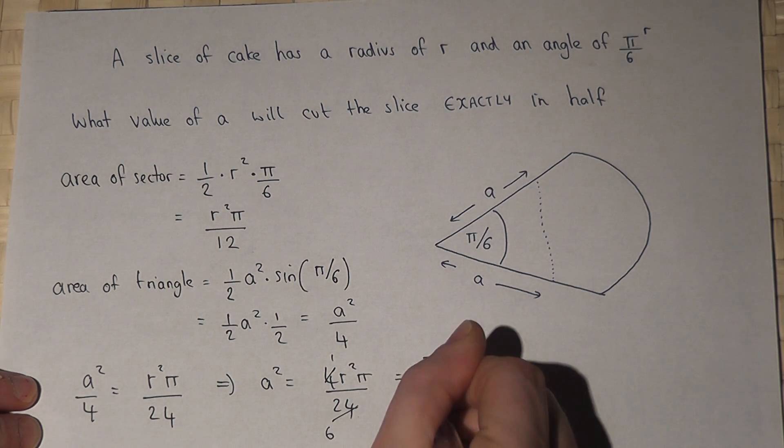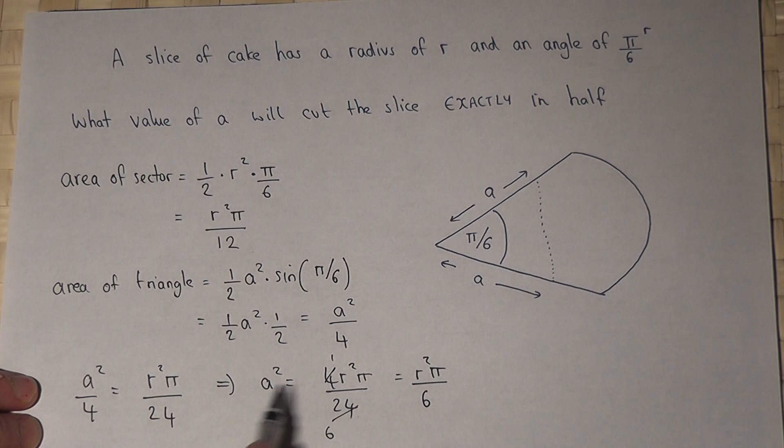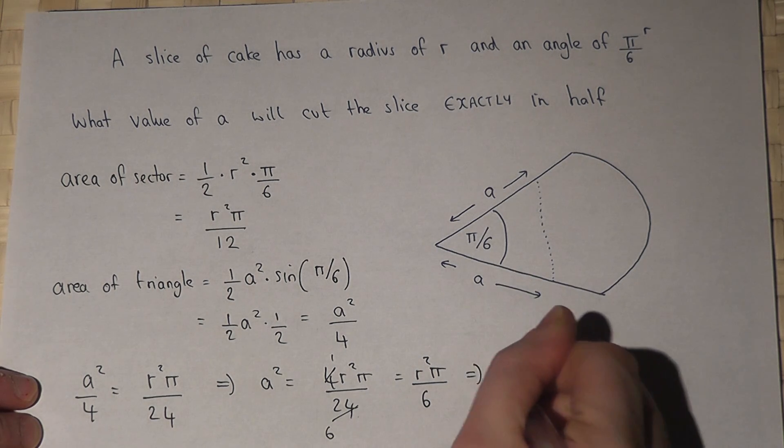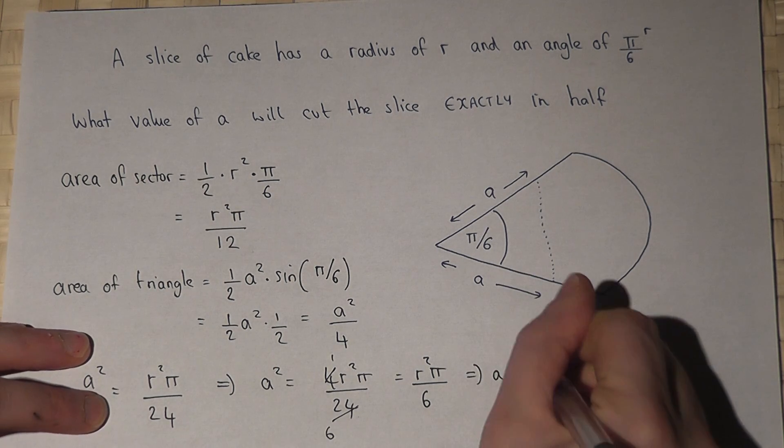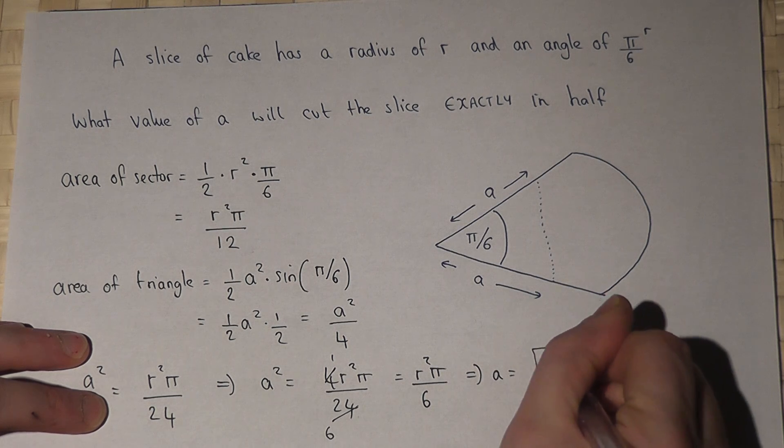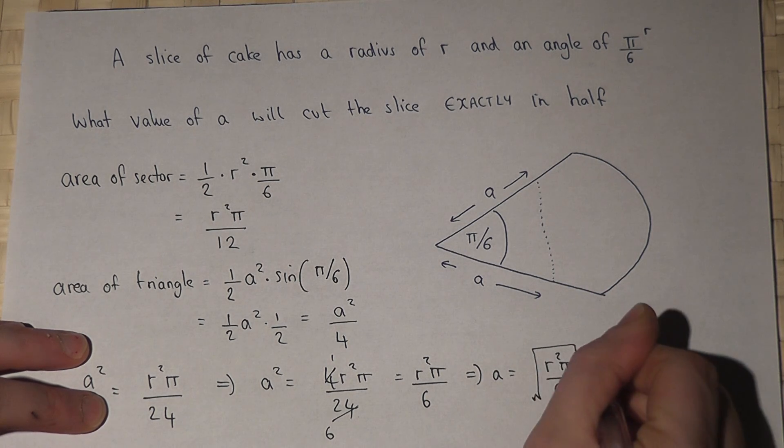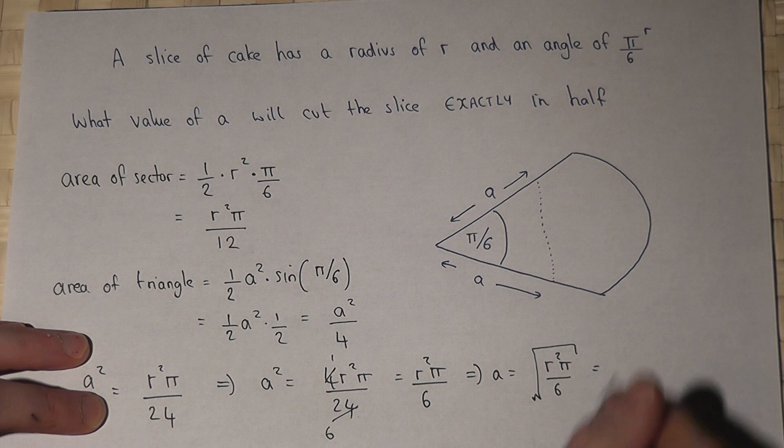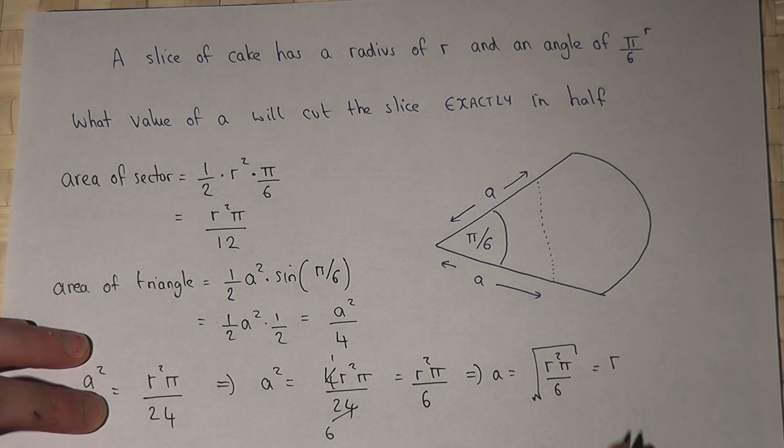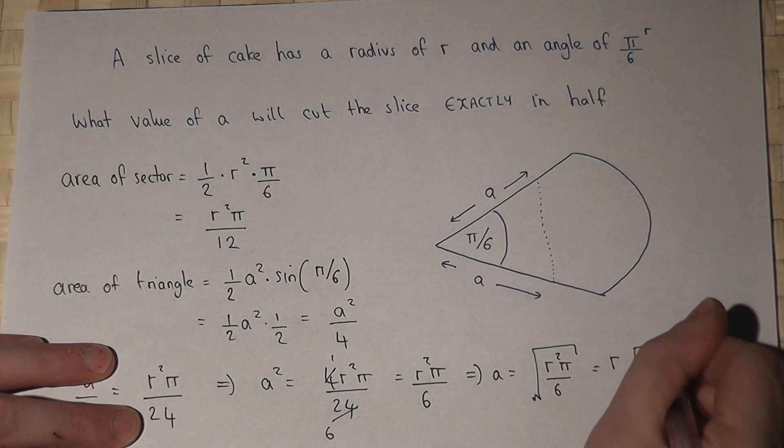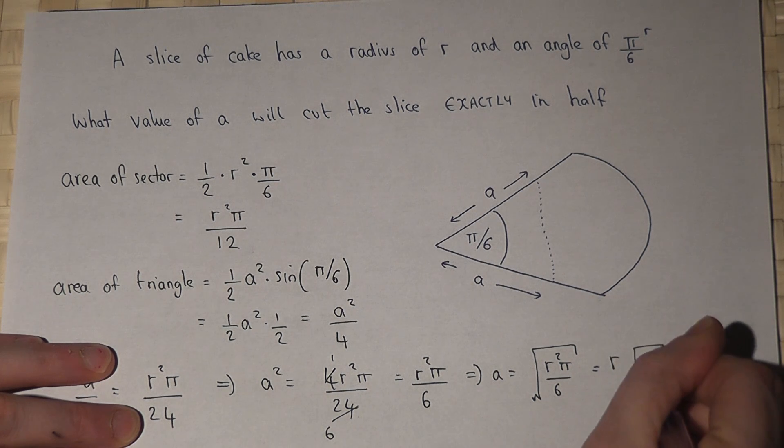So A just equals the square root of R squared pi over 6. The root of R squared is R so it's R times the square root of pi over 6.